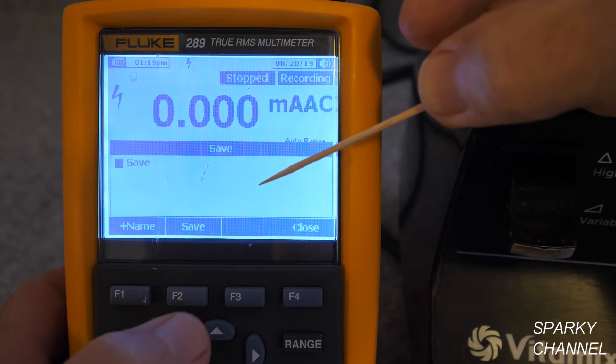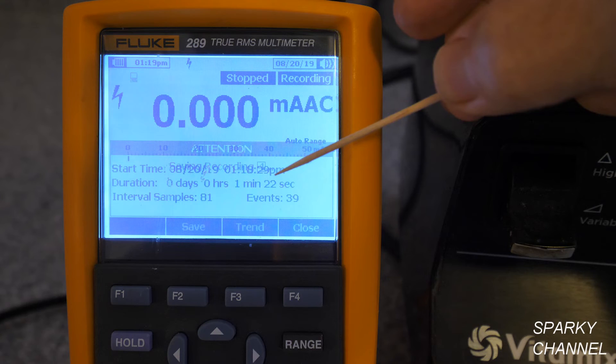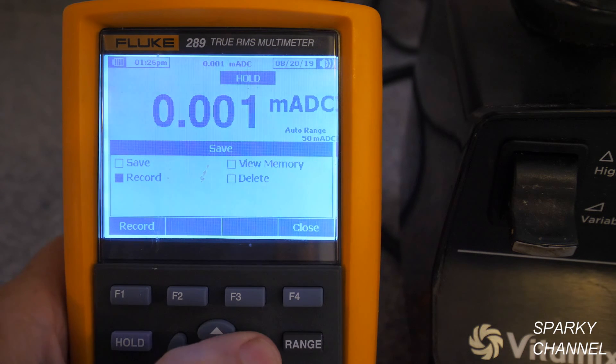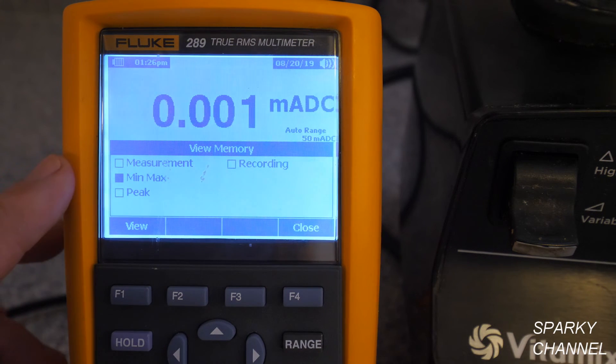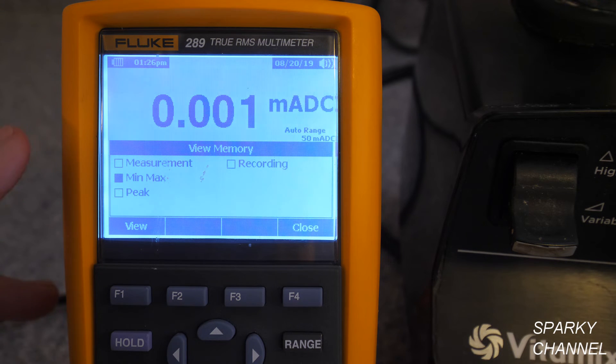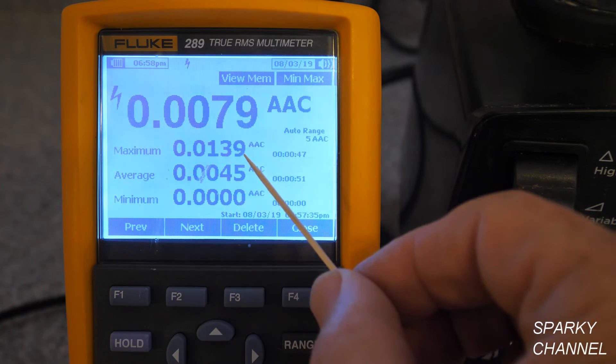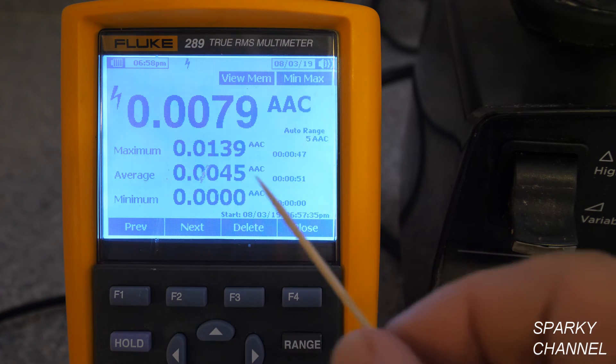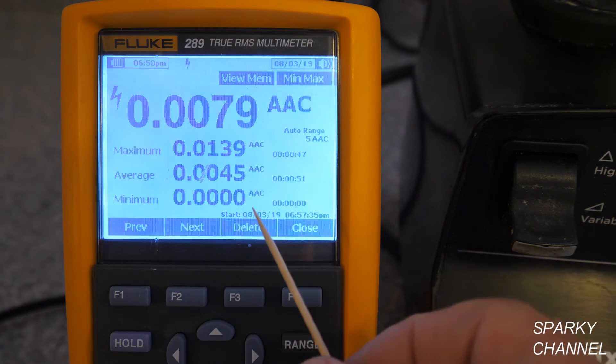I'm going to say save. Name. We'll call this recording 4. And I save it. Now I'm going to press save. And we're going to get out of record. We're going to go over here to view memory right here. There we go. And I'm going to say view. Minimum, maximum. Because remember, I wanted to see exactly how high that amperage got. It looks like it got a little over 12. Well, actually, the maximum was 13.9 amps AC. That's because you have to multiply this reading by 1,000. Because we're using the AC current clamp, the I-400 AC current clamp. So the average would be 4.5 amps AC. And the minimum was zero. So we'll close that.